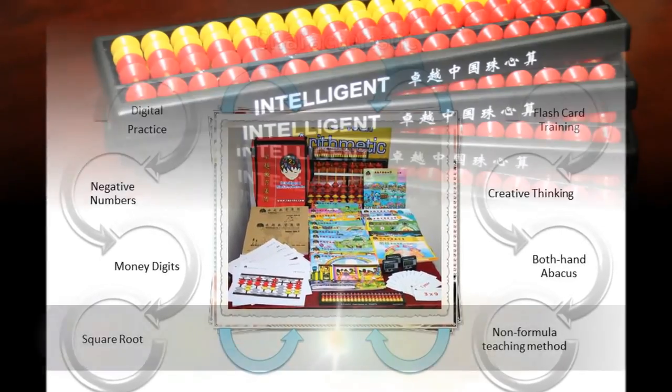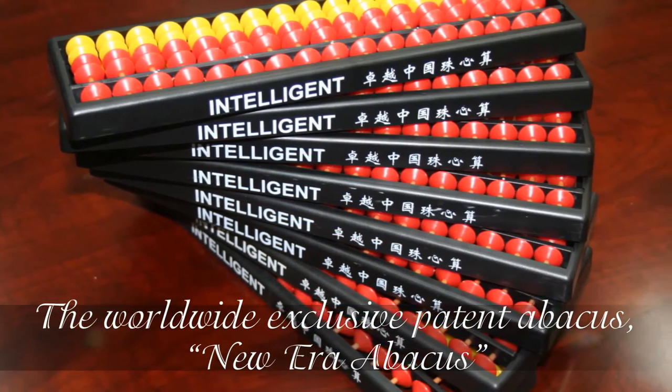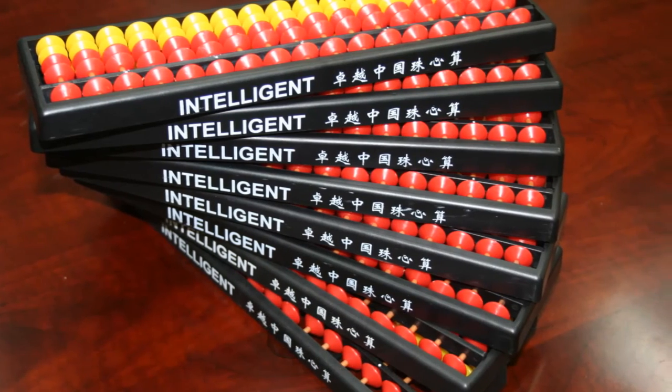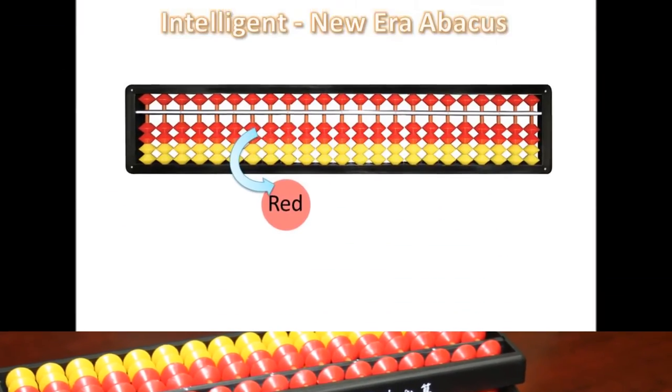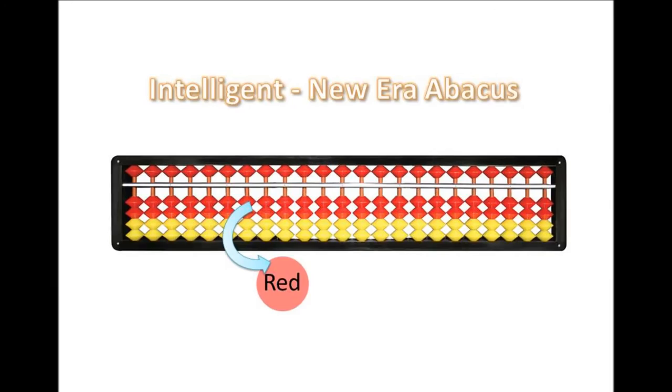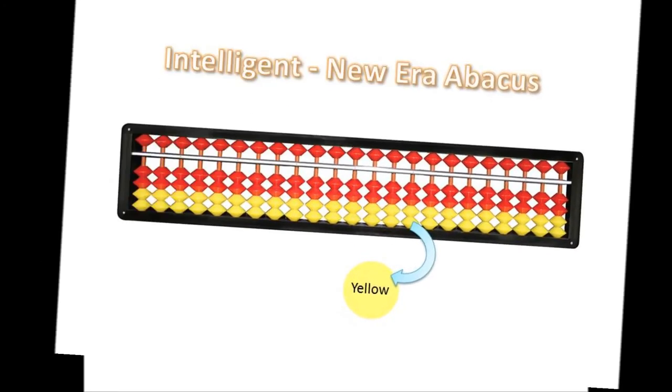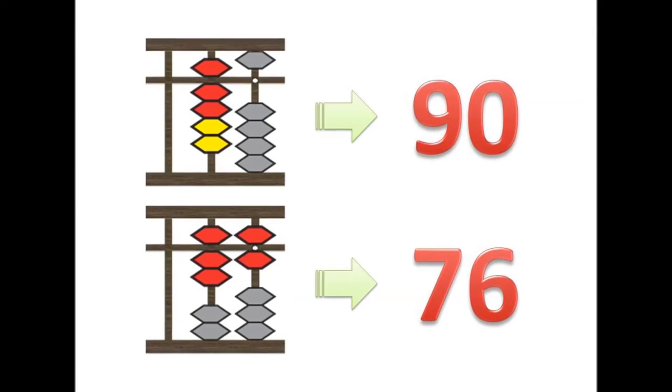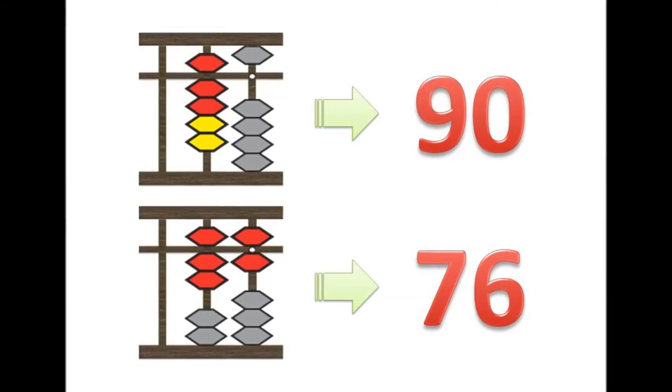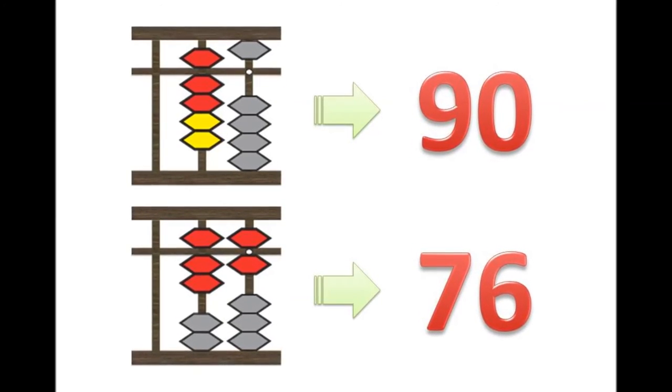The worldwide exclusive patent abacus, New Era Abacus, aims to stimulate visual sense and support the formation of images in the right brain through the red and yellow beads. The colors have a catalytic effect on students and reduce the error rate across all distinct levels.